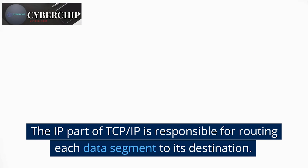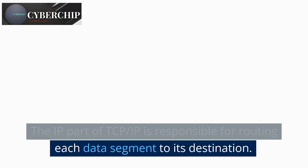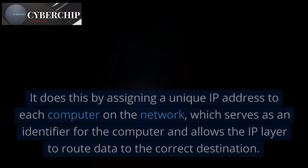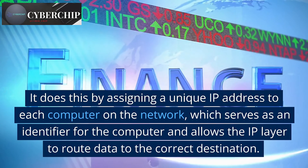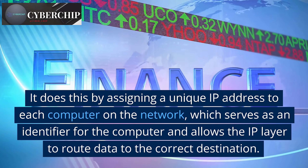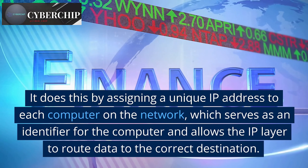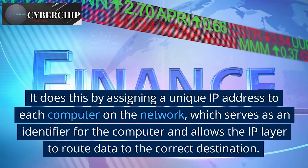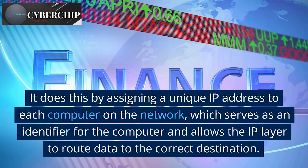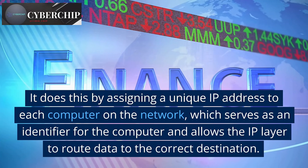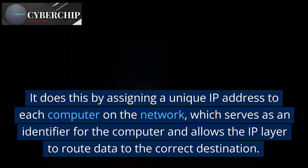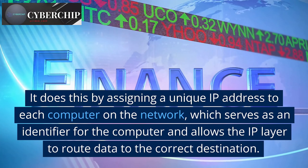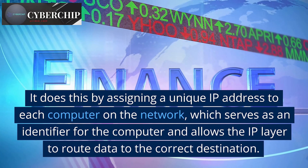The IP part of TCP/IP is responsible for routing each data segment to its destination. It does this by assigning a unique IP address to each computer on the network, which serves as an identifier for the computer and allows the IP layer to route data to the correct destination.